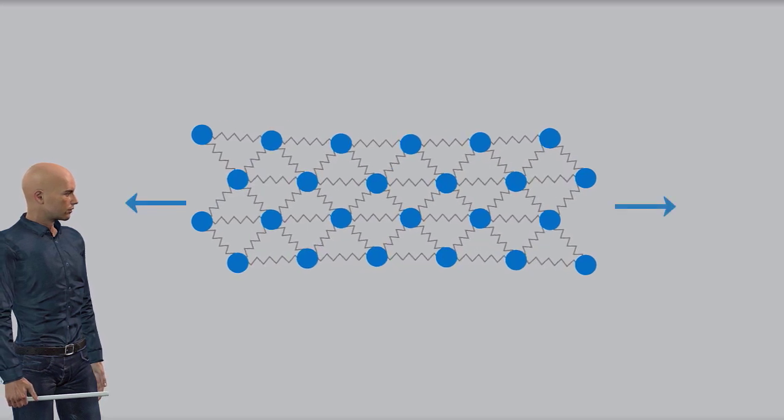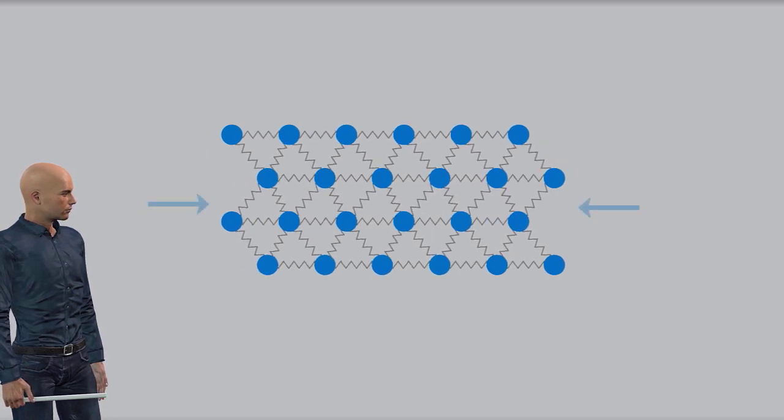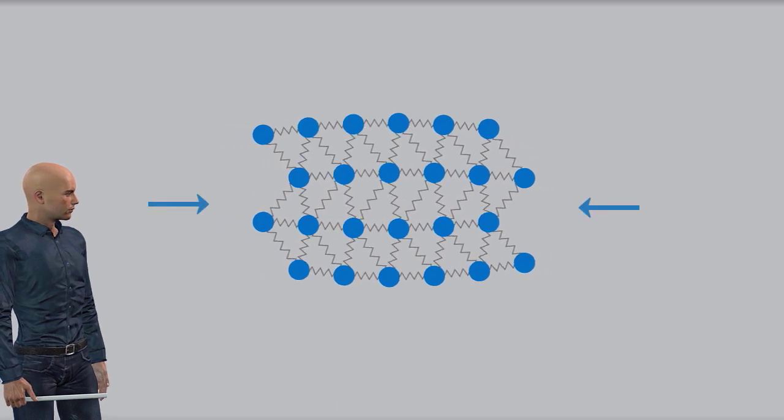When a truss member stretches in tension, the atomic particles are pulled apart, causing a small tension force to develop in each spring. Similarly, when the member is compressed, each spring undergoes a compressive force.